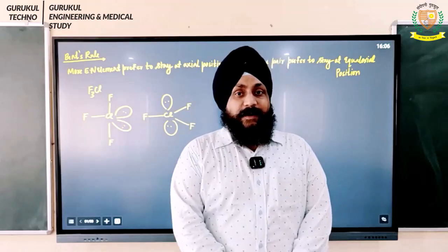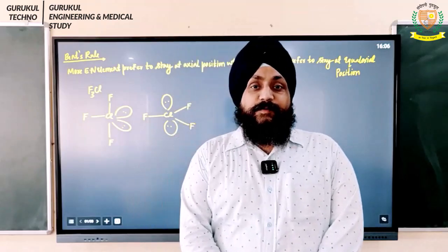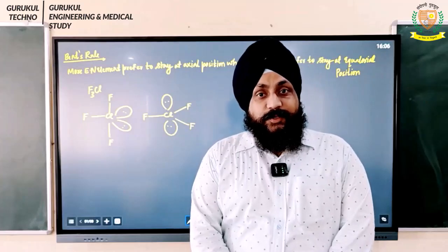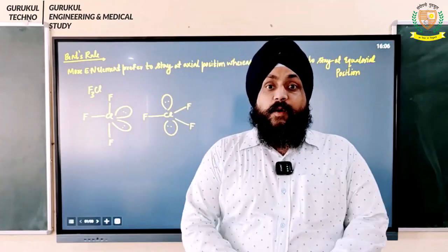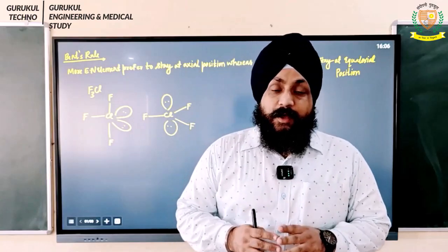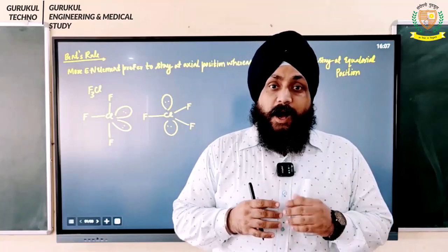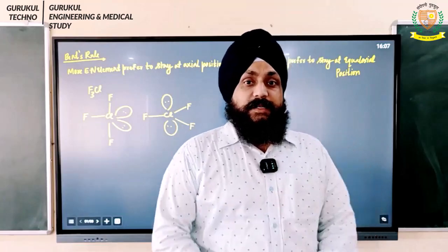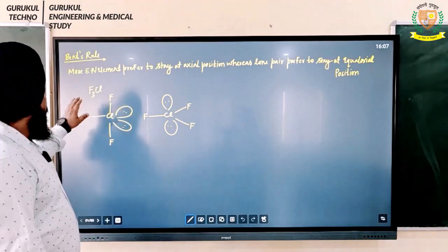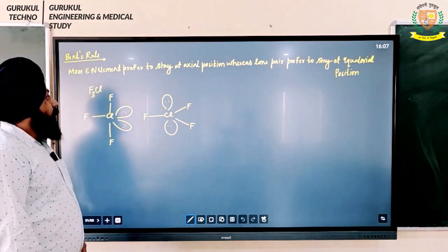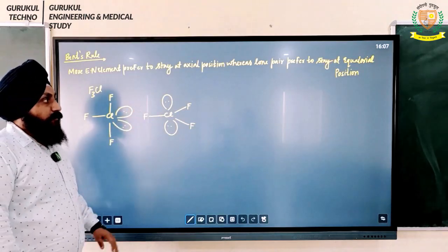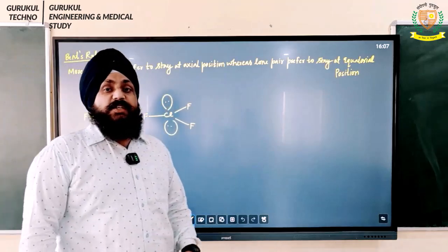Hello students, my name is Satnam Singh and I welcome you all on this online platform of Sandeepni Gurukul. Today we are going to understand one very important topic which is Bent's Rule. In Bent's Rule, they say more electronegative elements prefer to stay at axial position, whereas lone pair prefers to stay at equatorial position.